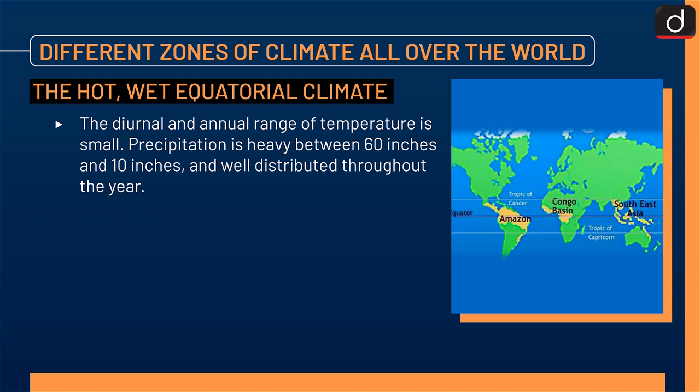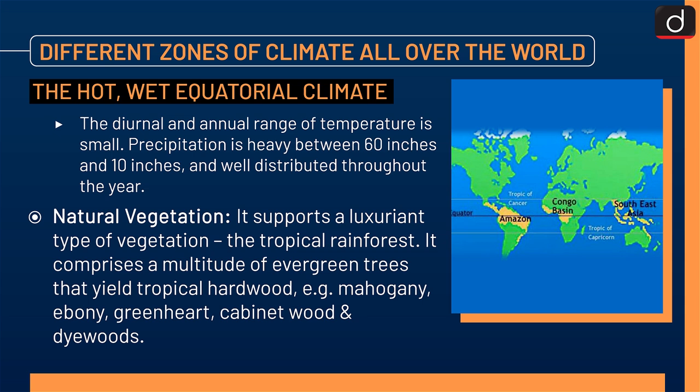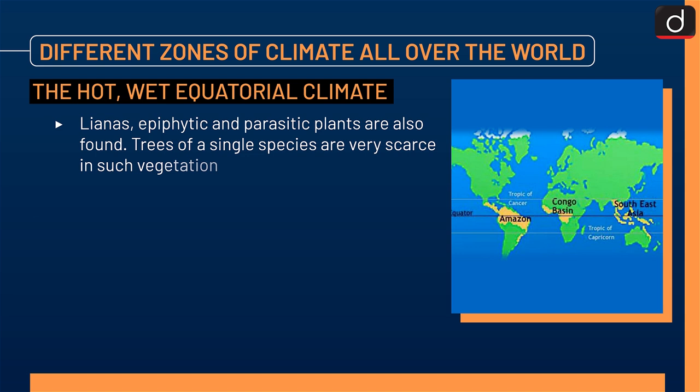Precipitation is heavy, between 60 inches and 100 inches, and well distributed throughout the year. Natural vegetation supports a luxuriant type of vegetation — the tropical rainforest. It comprises a multitude of evergreen trees that yield tropical hardwood, e.g. mahogany, ebony, green heart, cabinet wood, and dye woods. Lianas, epiphytic and parasitic plants are also found. Trees of a single species are very scarce in such vegetation.